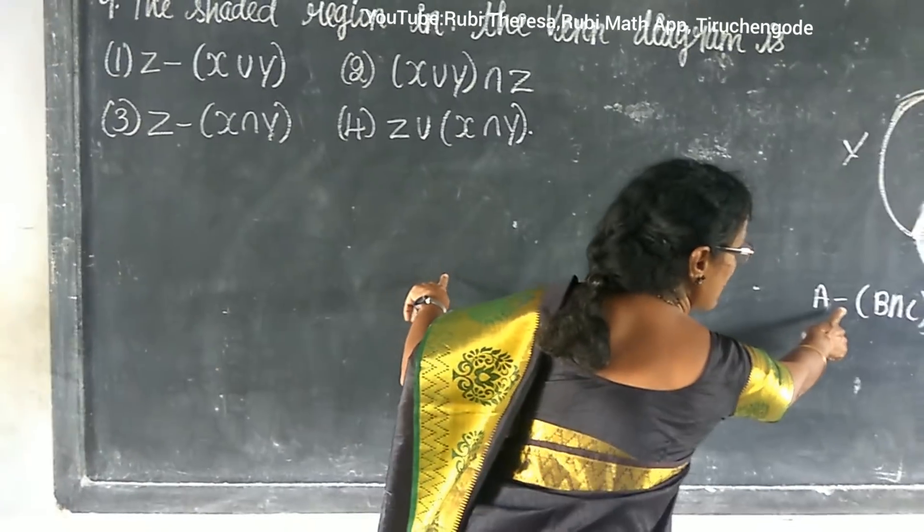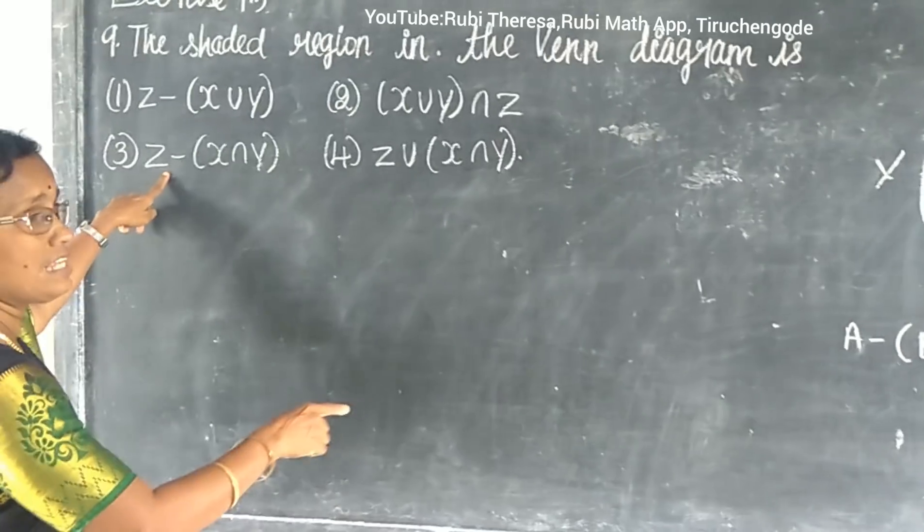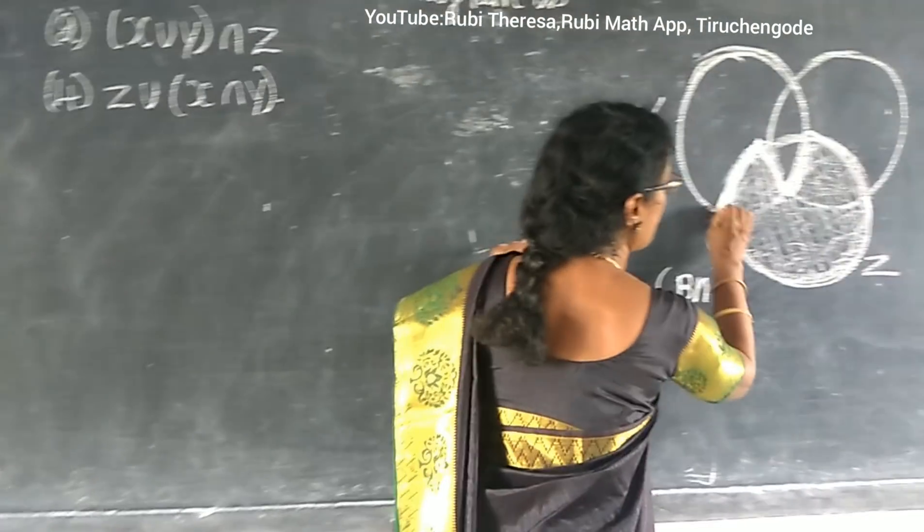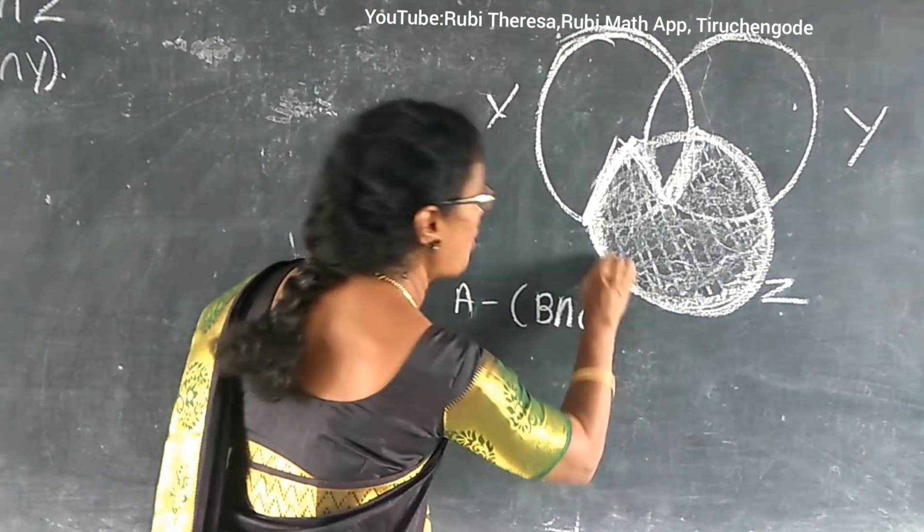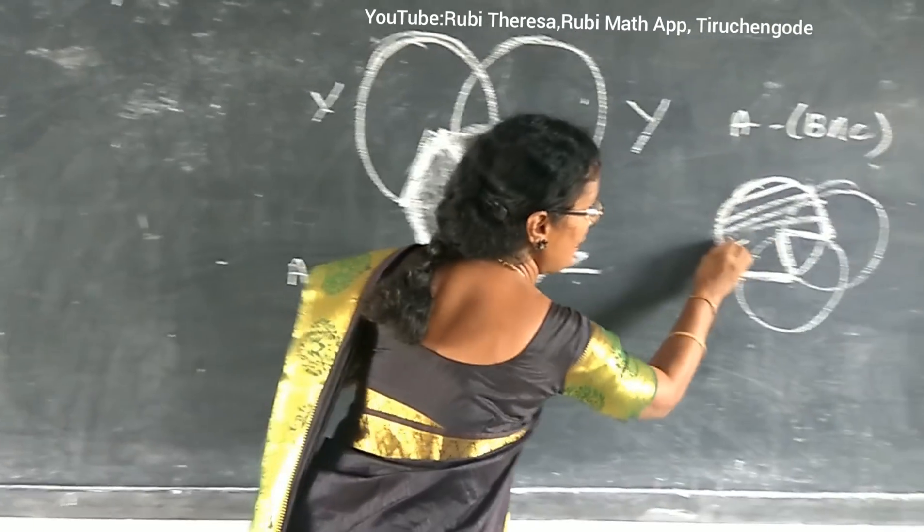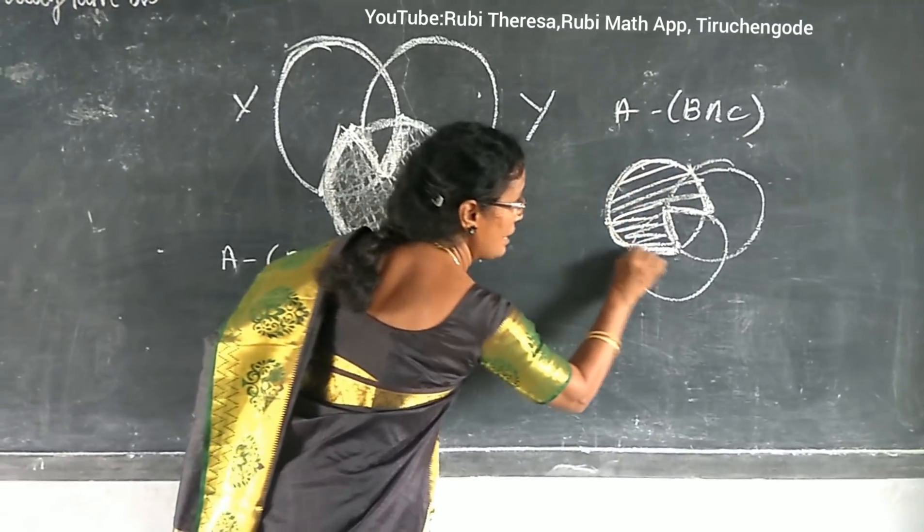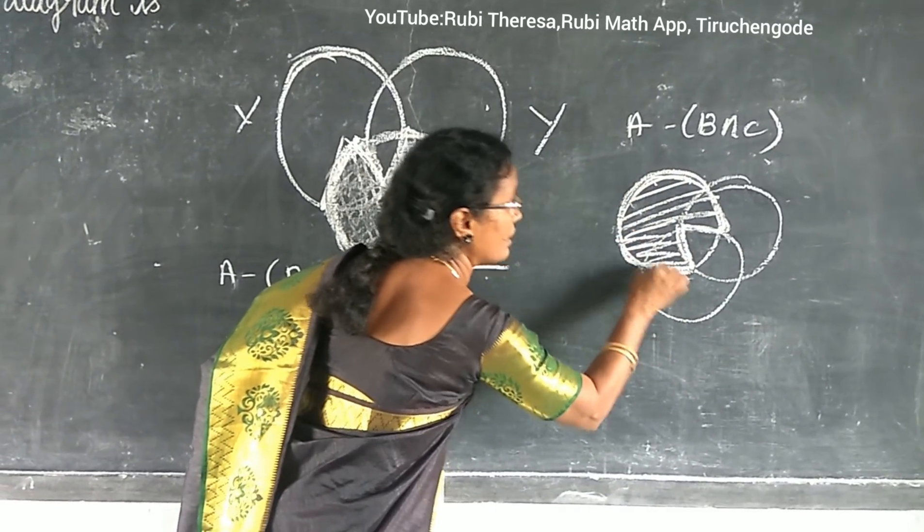But again, what you have to see? Difference. So what difference? Z difference, because this W shaded is found in Z. Here it is found in Y. Y difference B intersection C is this W shaded. Isn't it?